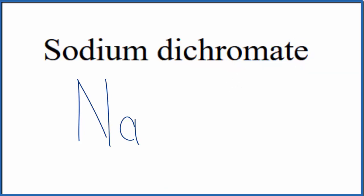So you either memorize the formula for the dichromate ion, or if you're allowed to look it up, you look it up. The formula for the dichromate ion is Cr2O7, and the whole thing has a 2- ionic charge.